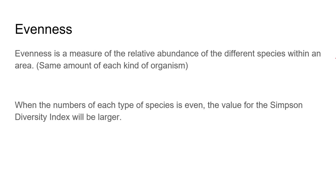Evenness is basically a measure of the relative abundance of the species — are there the same number of species A as there are of B? In community one a few slides back, that was a very even ratio: 25% A, 25% B, 25% C, 25% D. Whereas in community two, the evenness was much lower because species A dominated the entire thing. When you have a high evenness, the value for the Simpson's Diversity Index is going to be larger.